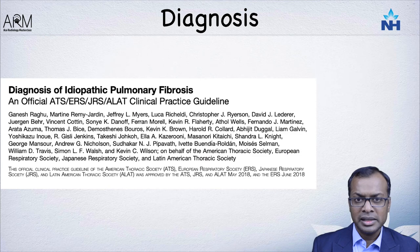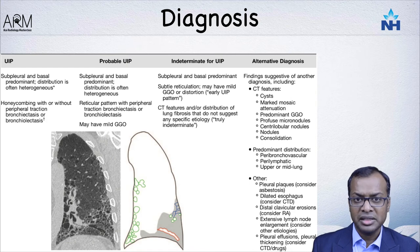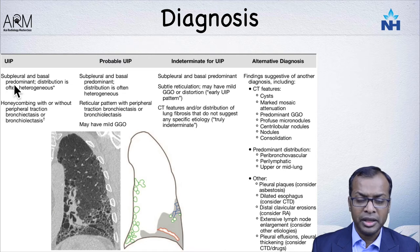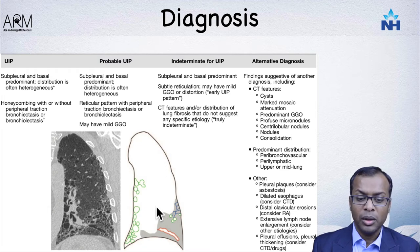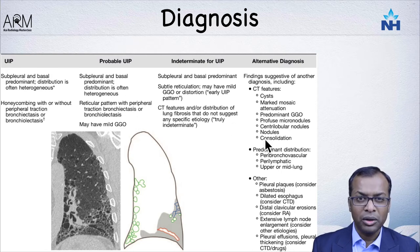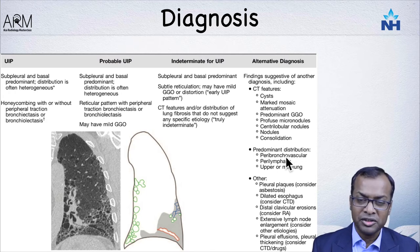In 2018, a new classification emerged for fibrosing interstitial lung disease with four categories. First, typical UIP — honeycombing, peripheral traction dilatation of bronchi, apicobasal gradient, and absence of non-UIP features. Probable UIP is the same pattern without honeycombing. If you start seeing a lot of ground glass opacity, nodules, air trapping, or central disease, you consider an alternative diagnosis. The fourth category is indeterminate for UIP.